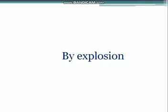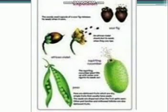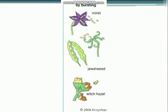Next is dispersal by explosion of fruits. Some fruits on drying burst open or explode, and as a result seeds are thrown away with force in all directions. For example, seeds of peapod and squirting cucumber scatter due to explosion. When the fruit dries, it bursts open and scatters its seeds, where new plants begin to grow.